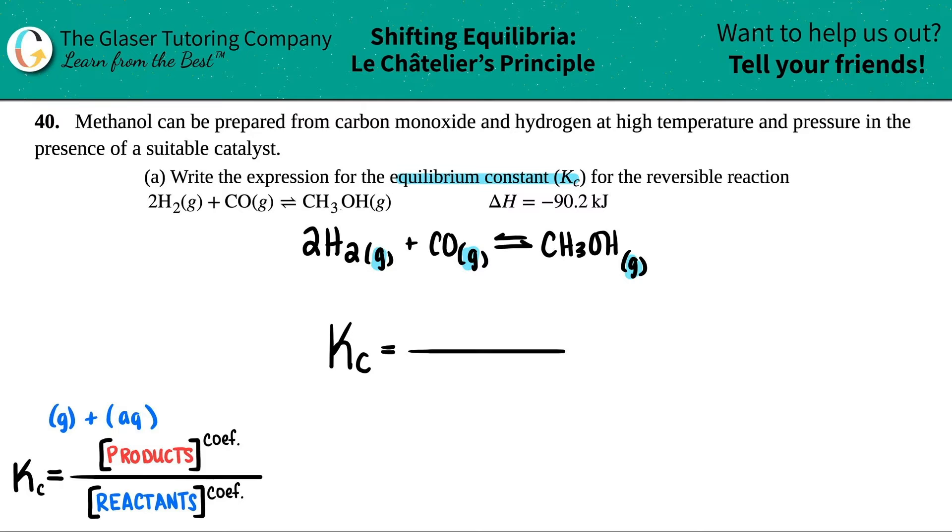Okay, now standard notation for Kc are these brackets. Brackets means concentration, aka molarities. So I'm just going to have a bracket product, right? So that's the CH3OH. Close the bracket up. And remember, you raise it to the coefficient, but there was no number here. So that means there was just one methanol. So I can raise it to the first, but I don't have to.